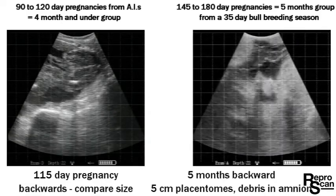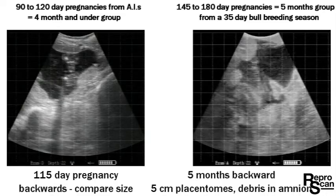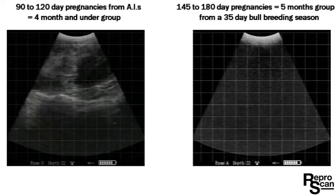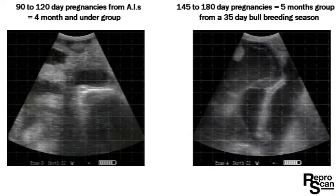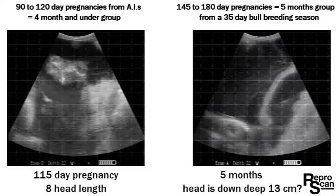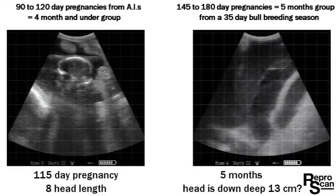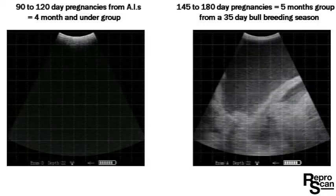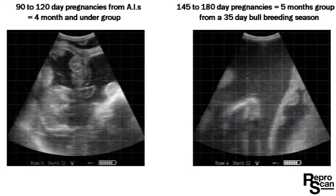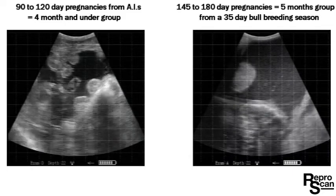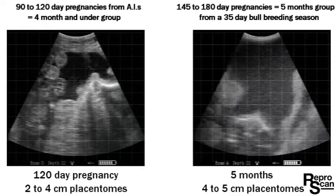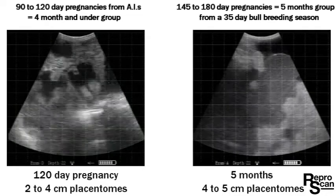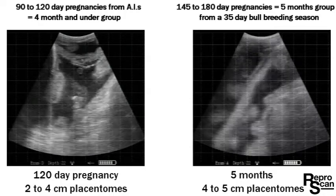Here's another one backwards — you can just see the tail there — with lots of placentomes and debris in the amnion. On the left is a 115 day pregnancy, and quickly a head length of four squares, eight centimeter head length. On the right we see a five month pregnancy with the head down quite deep; we can try to get a head diameter there, and the placentome size is four to five centimeters. Back on the left is a 120 day pregnancy.